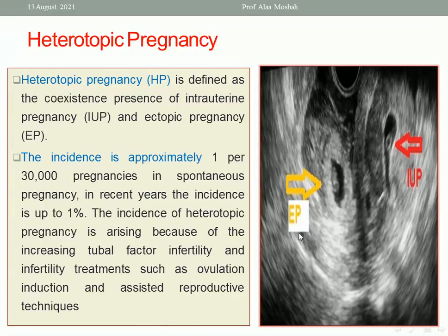Heterotopic pregnancy is defined as the co-existence of an intrauterine pregnancy and an ectopic pregnancy simultaneously. The incidence is 1 in 30,000 spontaneous pregnancies, but has risen to approximately 1% due to increasing tubal factor infertility and use of ovulation induction and assisted reproductive techniques.